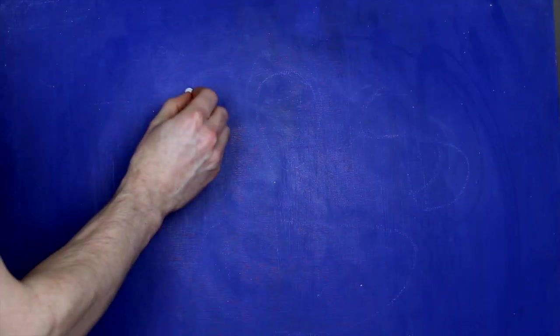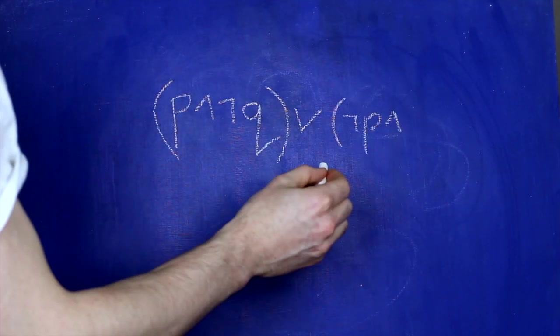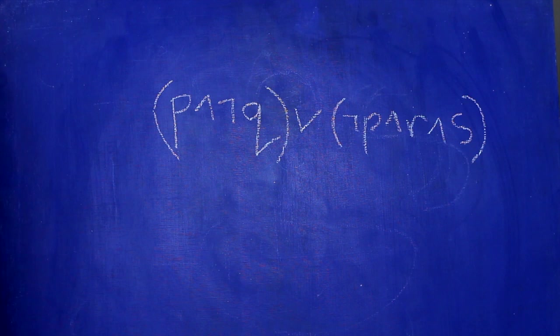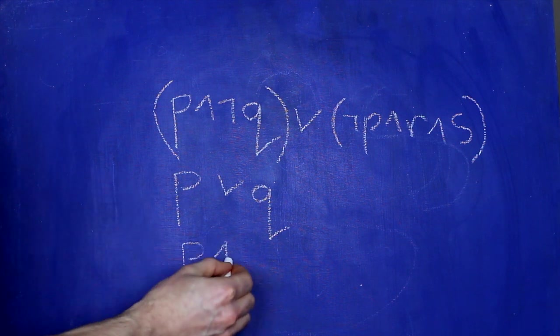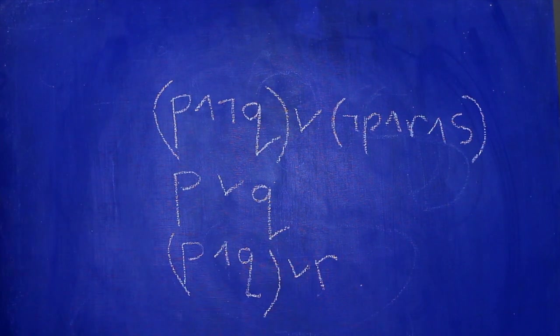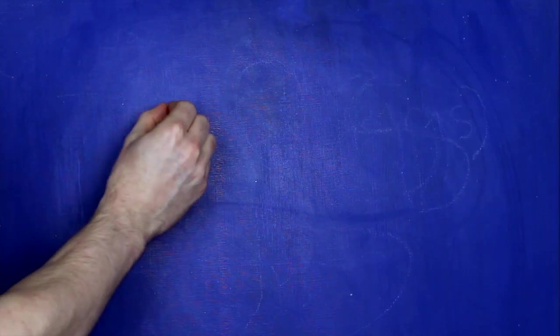Okay, so look at these examples here. This one's in disjunctive normal form because it's a disjunction of conjunctions of literals. The same with this one. So's this one. And so's this one. Even though there's no disjunction symbols here, there's no conjunction symbols, we can think of p on its own as a disjunction.